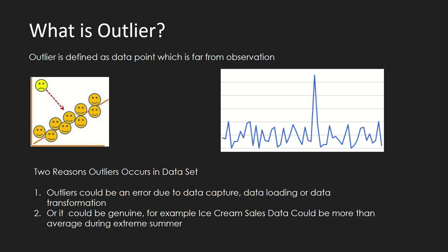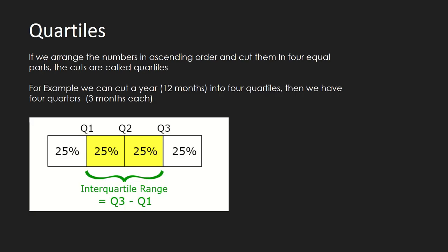Before understanding box plot, it is important to understand quartiles. Let's say you have a dataset and I tell you to divide it into four equal parts. In order to do that, you will mark three lines: Q1, Q2, and Q3. Drawing three lines divides the dataset into four equal parts of 25% each.